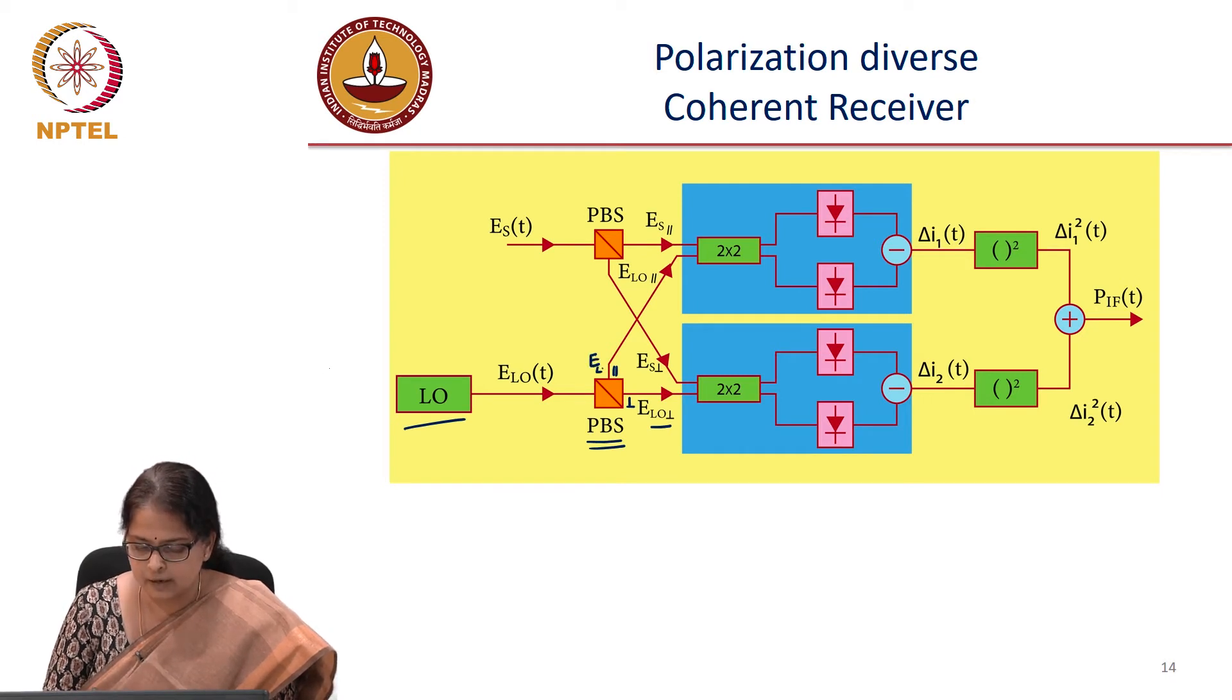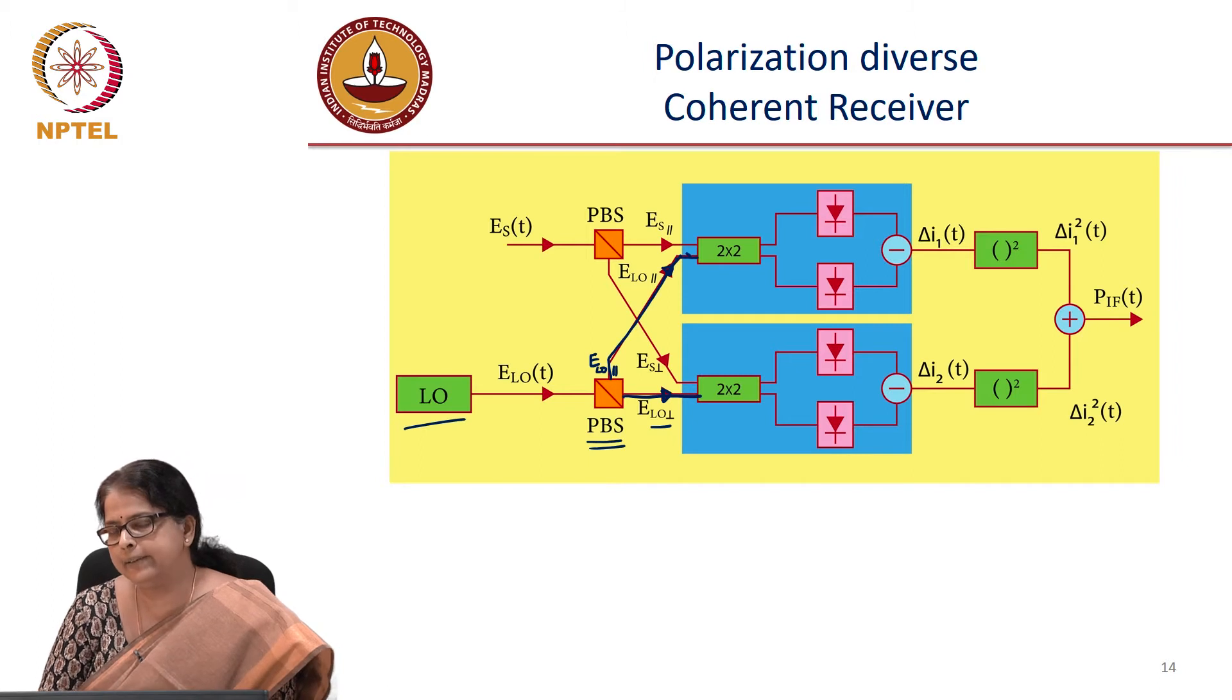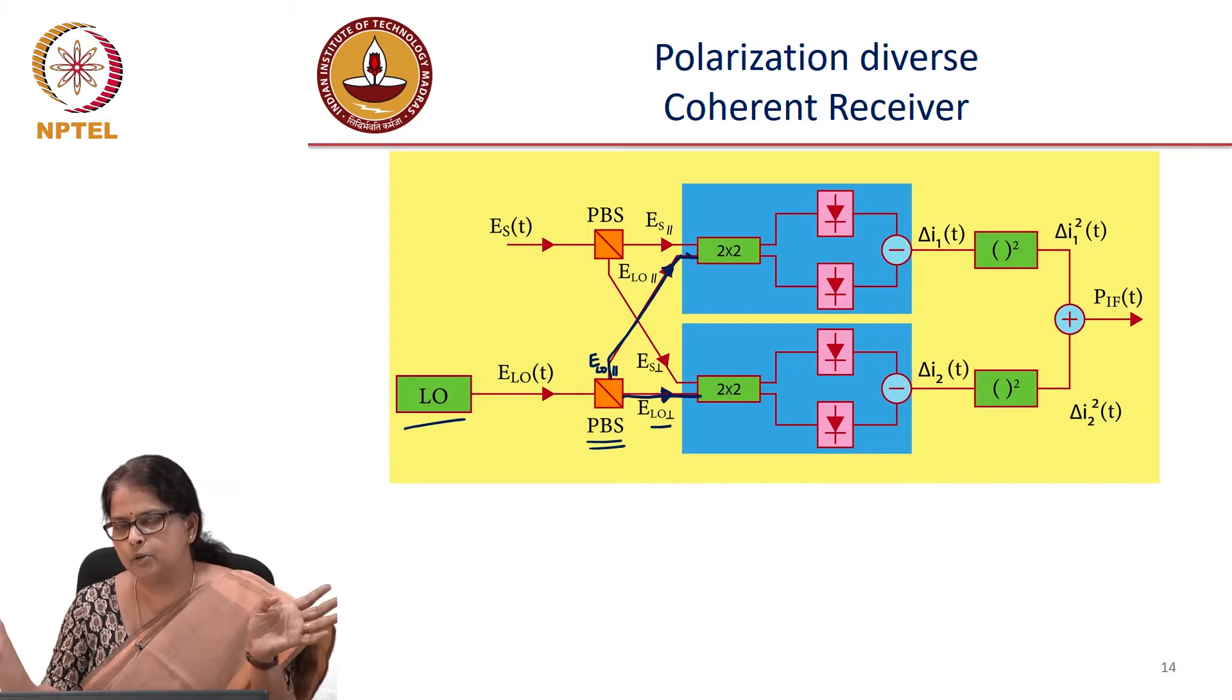So the output here is ELO parallel polarization and the output here is ELO perpendicular polarization. The ELO parallel polarization gets fed into this coupler, whereas ELO perpendicular polarization gets fed into this coupler. The signal also does not matter whether it is single pole or dual pole, you split the dual pole.